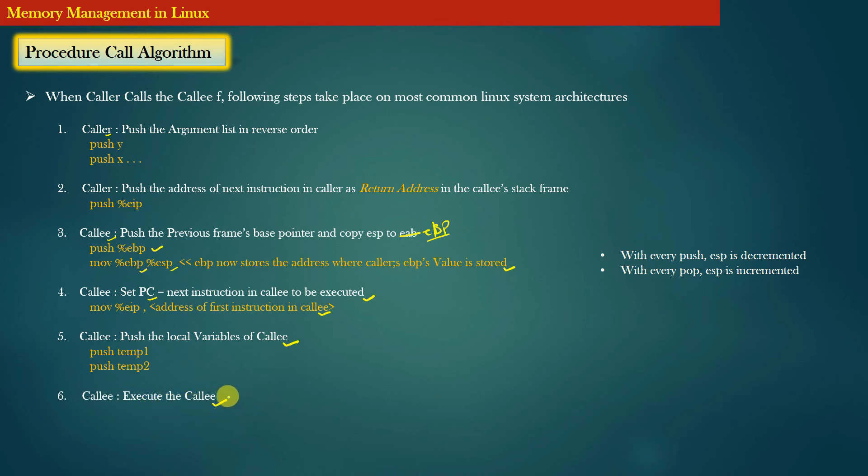So note that here with every push operation, the stack pointer that is ESP is decremented. Decremented means it points to the more lower address in the stack memory, because we push the data in the stack memory and the stack memory grows downwards.